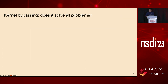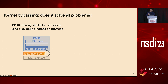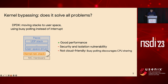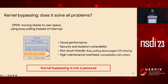How about kernel bypassing — does this solve all the problems? We think the answer is no. For example, the representative technique DPDK moves the networking stack to user space and uses busy-polling instead of interrupt handling. This gives good performance as it bypasses a heavyweight kernel and avoids context switching. However, kernel bypassing tends to cause security and isolation vulnerabilities, because application code may corrupt network stacks and can directly manipulate NIC hardware. Moreover, it is not cloud-friendly because busy polling discourages CPU sharing among many applications on the same server. Finally, it incurs high maintenance overhead, as you need to maintain your own networking stack in user space and make it compatible with others using the kernel networking stack. Therefore, we think kernel bypassing is not a panacea.